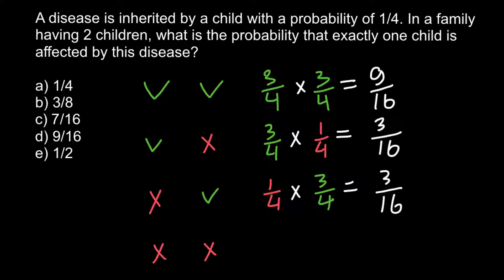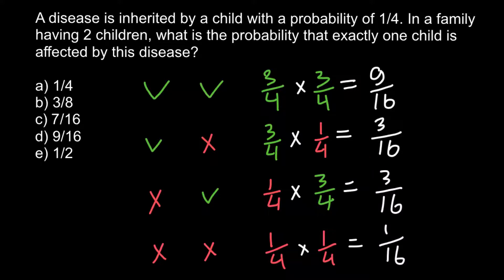The probability that both the first and second child are affected equals 1 over 16. Adding all probabilities: 9 plus 3 plus 3 plus 1 equals 16, giving us 16 over 16, which represents 100% of all probabilities combined. So no other variants are possible.